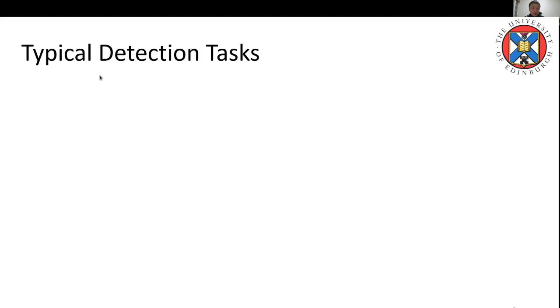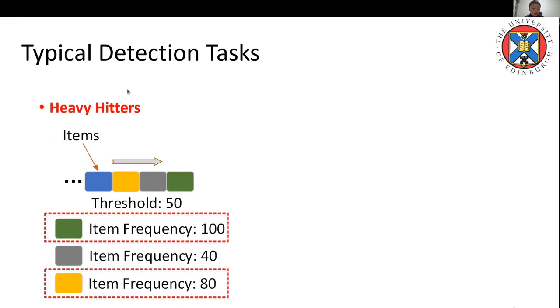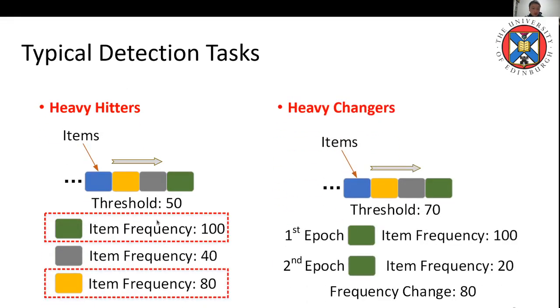There exist several typical detection tasks. Here I use heavy hitter as an instance. Heavy hitter detection is to detect items with high frequency, like over 50 in this example.